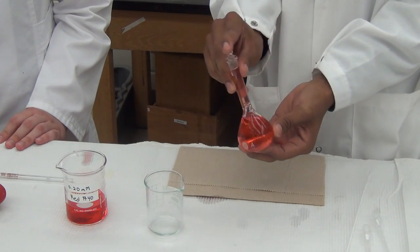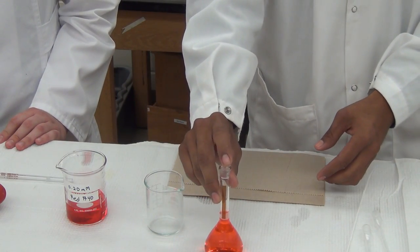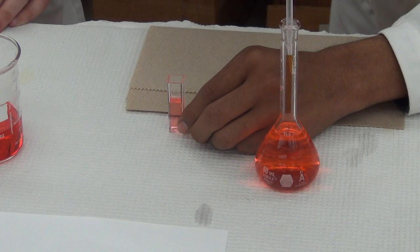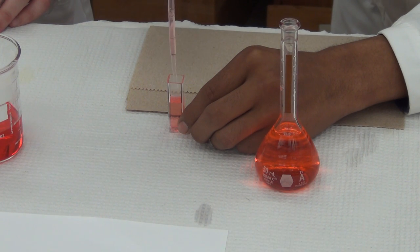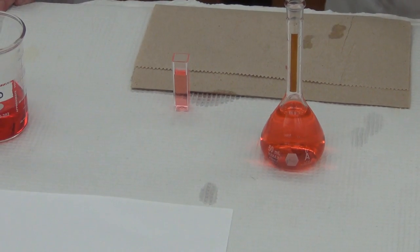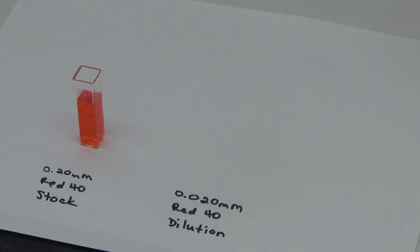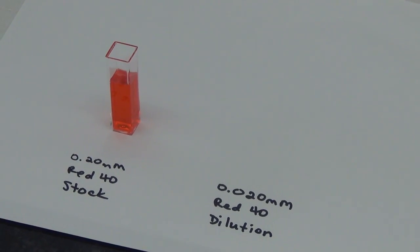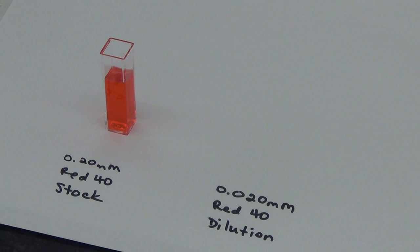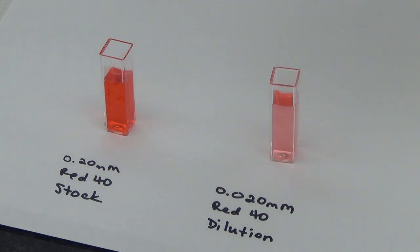If we place the 0.20 millimolar Red Number 40 stock solution and the 0.020 millimolar Red 40 diluted solution into cuvettes of the same size and shape, we can easily see the color of the stock solution is darker than the color of the diluted solution.